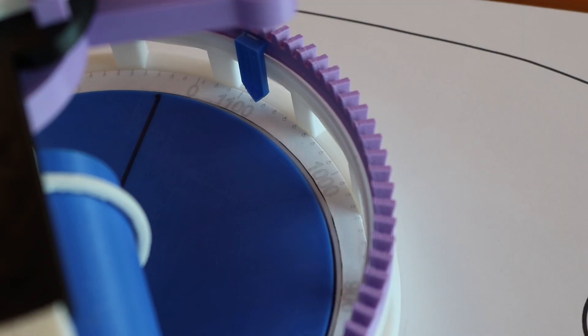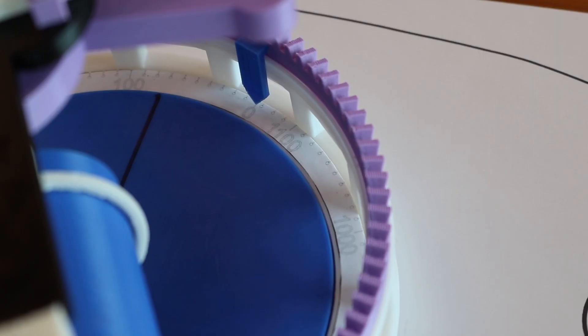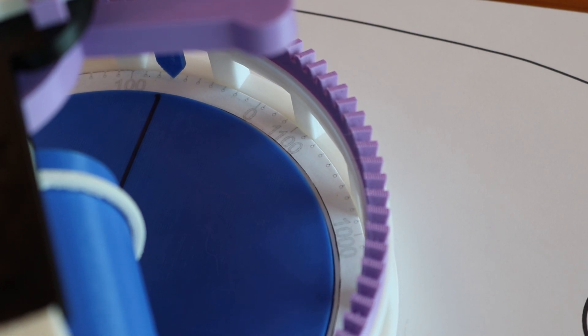To read the result, you first zero the output dial, then as you trace the curve, this gear containing the dial will move sideways depending on how much area was traced.